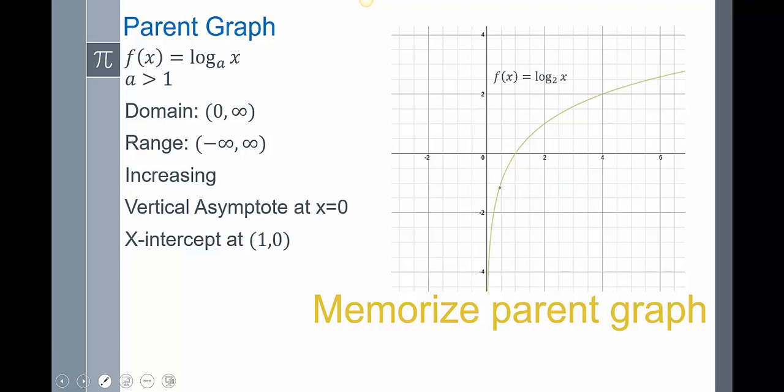My range, that goes down forever, that goes up forever. So it's negative infinity to positive infinity. This is something that we need to memorize. It's very important. And we're going to talk about transformations of this parent graph tomorrow.